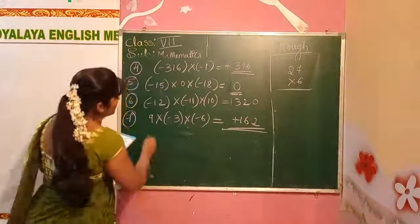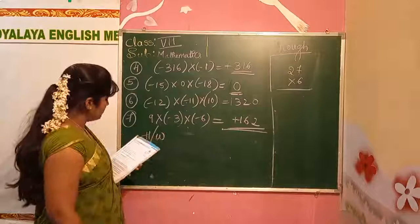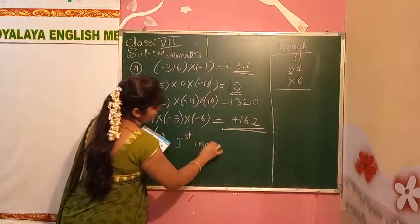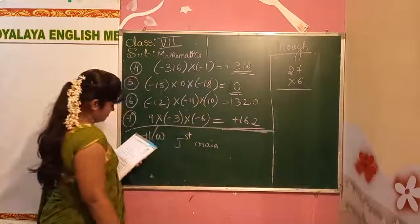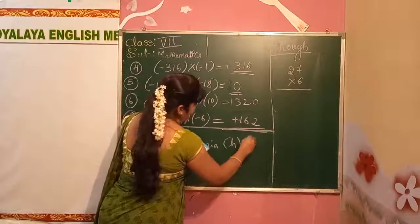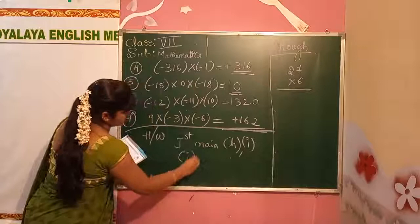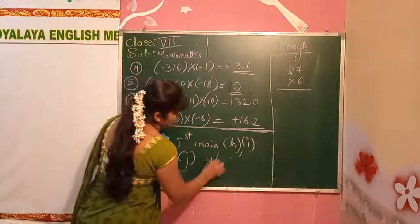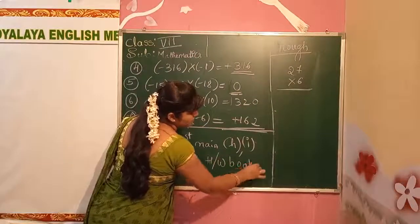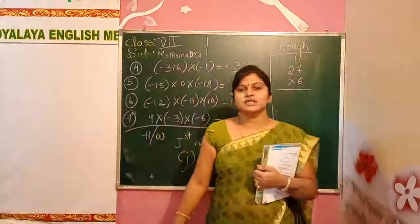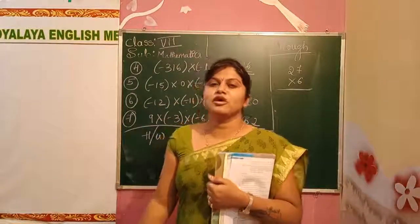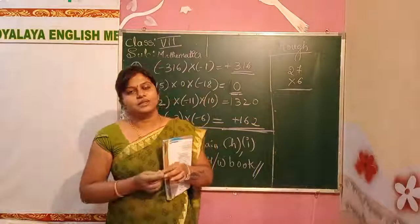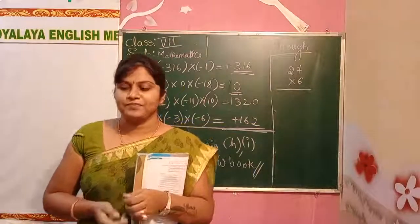Today's homework: we completed up to G. Your homework is to solve sums H, I, and J from Exercise 1 in your homework book. We will send you other sums on WhatsApp. Please revise it once and try to solve many sums using the properties. See you in the next class. Bye!